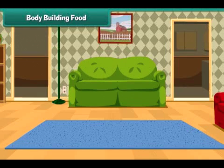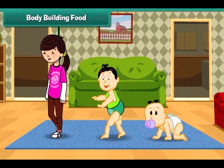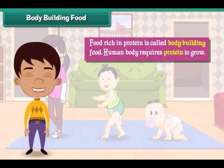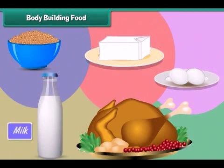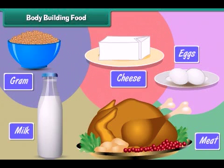Body building food: The human body needs protein-rich food to grow. Food rich in protein is called body building food. Milk, eggs, meat, cheese, and gram are examples of body building food.